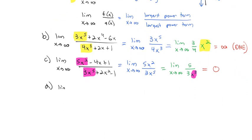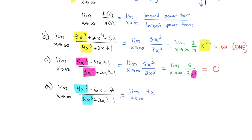For the limit as x goes to infinity of (4x³-6x-7)/(8x³+2x²-1): the largest exponent terms take over — 4x³ on top and 8x³ on bottom. Everything else goes away, giving us 4x³/(8x³). The x's divide out, 4/8 reduces to 1/2, and there are no x's left. So we end up with a horizontal asymptote at 1/2, and the limit equals 1/2.